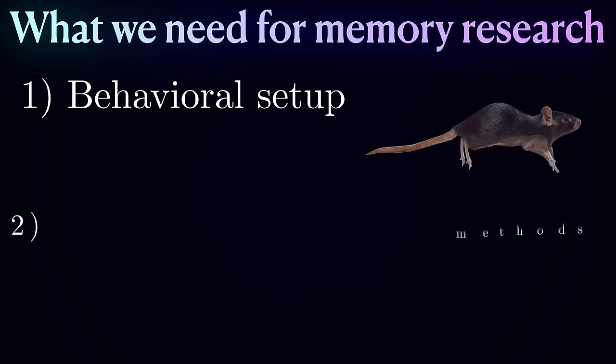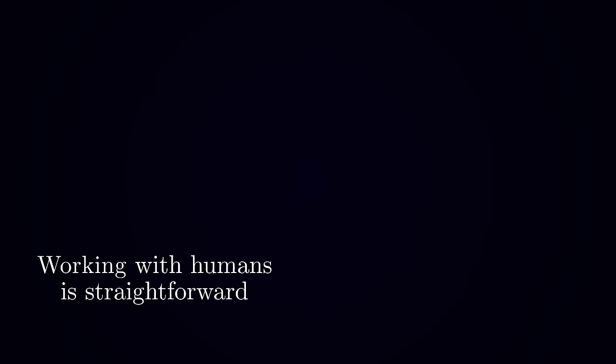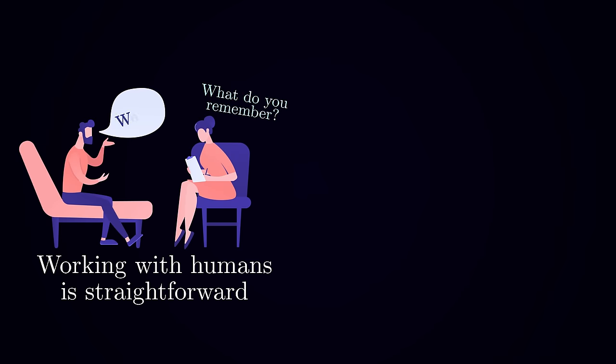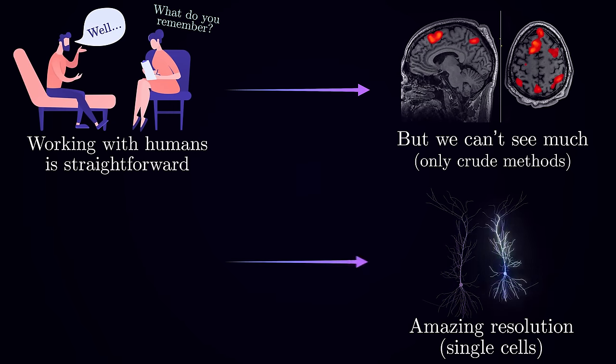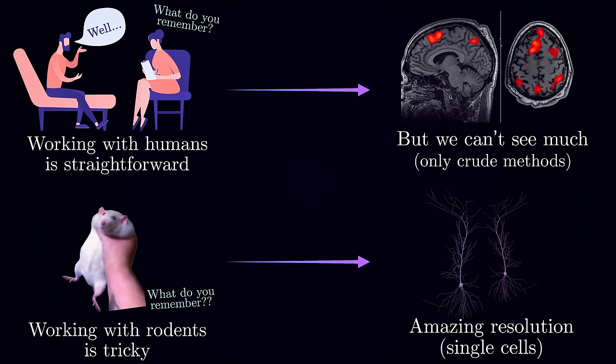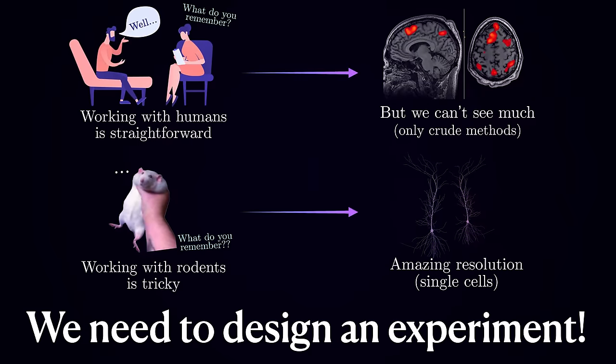To address what happens in the brain during memory encoding, we need two crucial pieces: a proper behavioral task and the means of experimentally monitoring the changes that occur in the brain. It is only when you are working with human subjects you can explicitly ask them if they remember something or not. But looking at the level of single cells is only possible with model organisms, such as rodents, and they for sure can't tell you the contents of what they remember. However, to overcome this problem, we can use a clever experimental design.